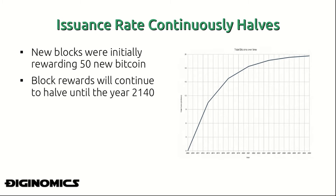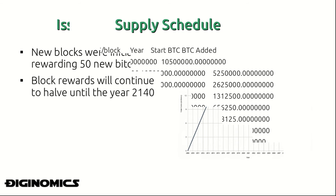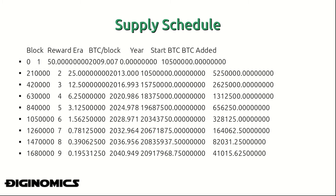Essentially, the issuance rate approaches close to zero but not quite zero, and this decreasing inflation rate is the disinflationary nature of Bitcoin. Looking at the supply schedule, the rewards per block began at 50, then halved to 25, 12.5, 6.25, 3.125, and so on. By the year 2040, each new block will contain approximately 0.1953125 Bitcoin — you can see this disinflationary effect in action.